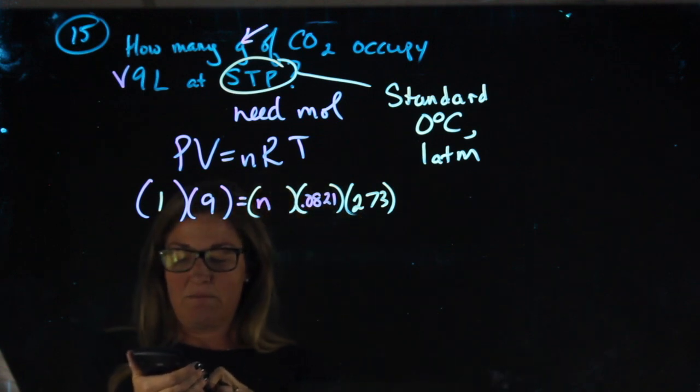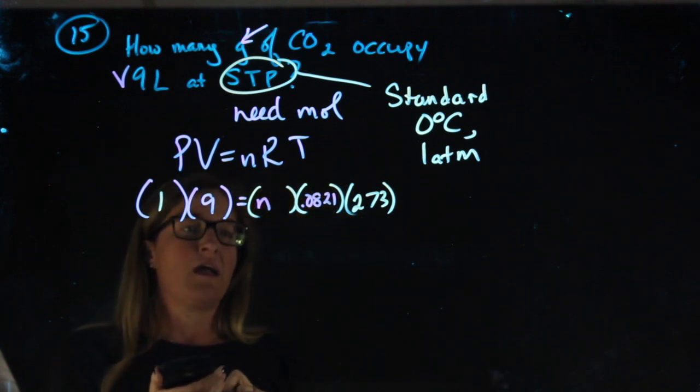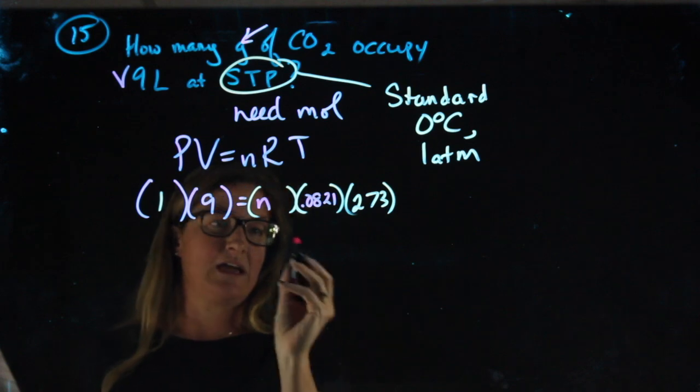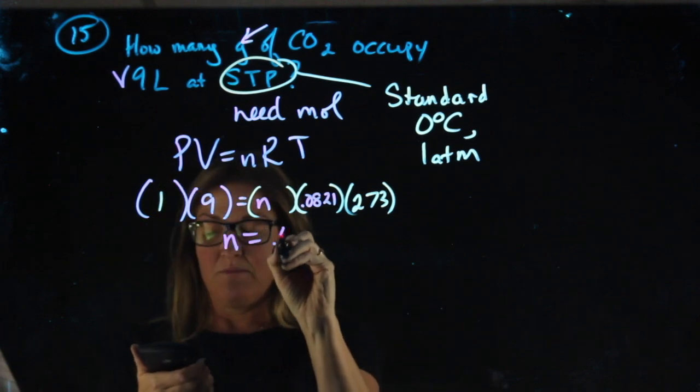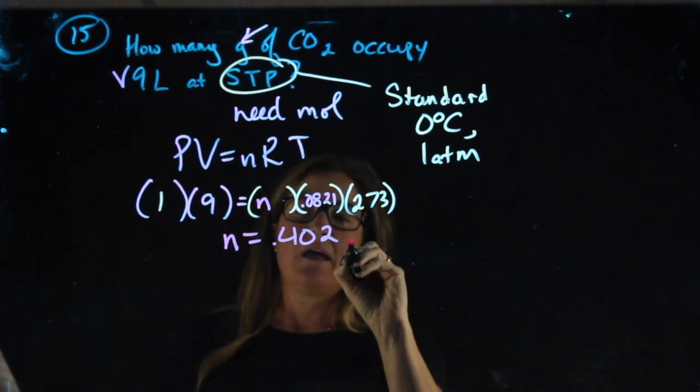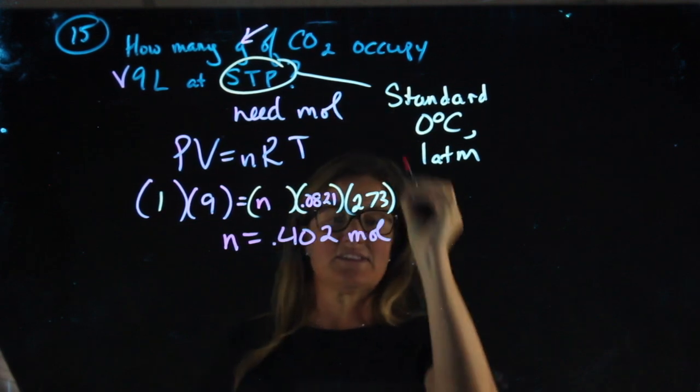Solving, I'm going to do 9 divided by 0.0821 and divided by 273, and I get n to be 0.402. n is my moles, and this is a carbon dioxide.